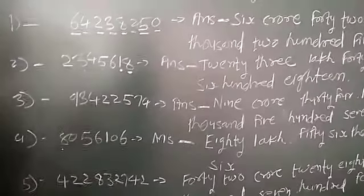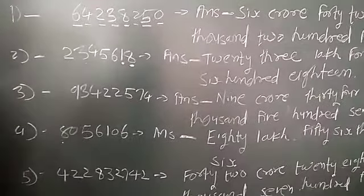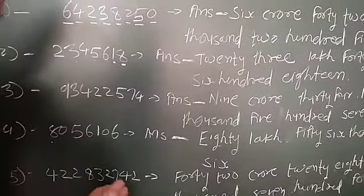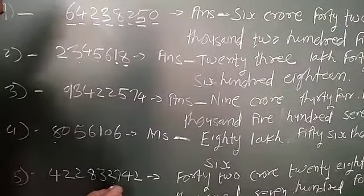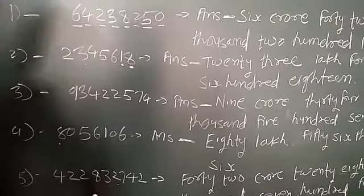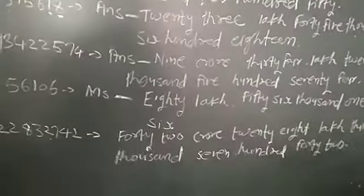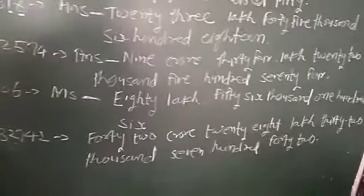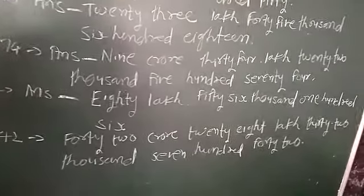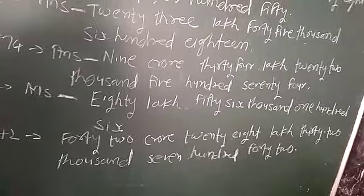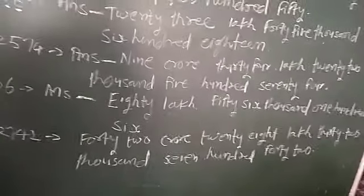Here I have the fifth number. This is 10,000,000,000,000,000,000,000,000,000,000 and 100,000,000,000. I got 10,42,28,32,742.